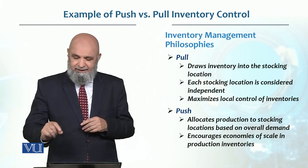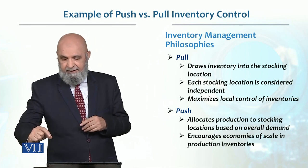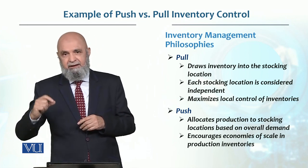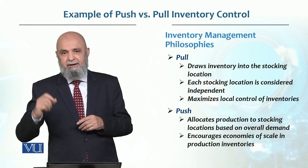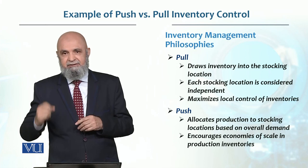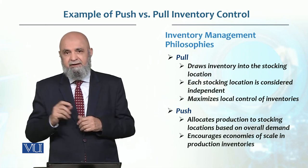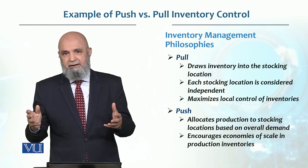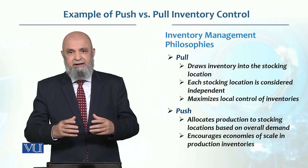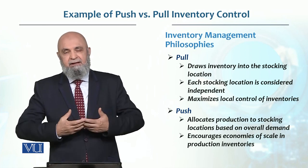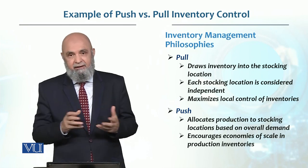Although demand comes from the locations — let's say demand at location A is 5,000 units, location B is 3,000 units, and location C is 4,000 units — the total demand is 12,000 units. However, the factory has its economies of scale, so it may produce more, say 15,000 units.